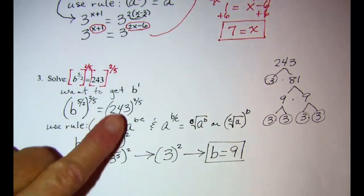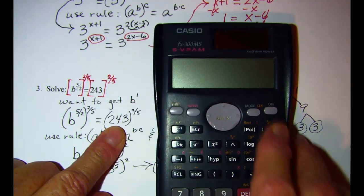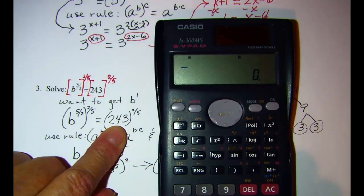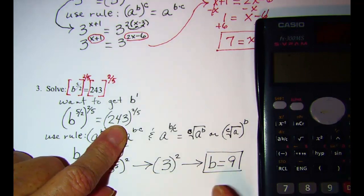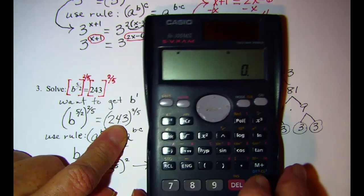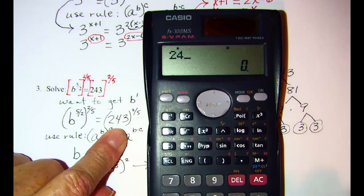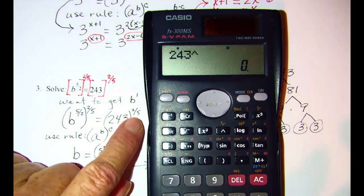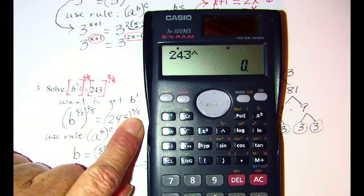Now if we wanted to raise this on our calculator. Sometimes on the calculator it doesn't come out nice because it's an irrational number. We know that this one will. So let me show you that on the calculator. If we have 243 raised to the power, if I just raise that to the 2 divided by 5...